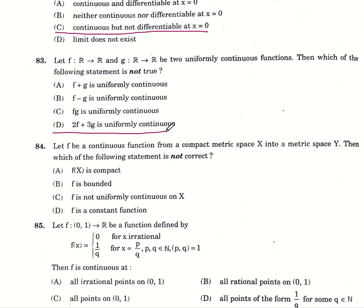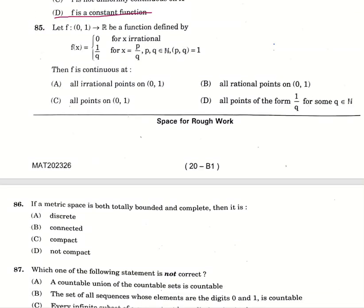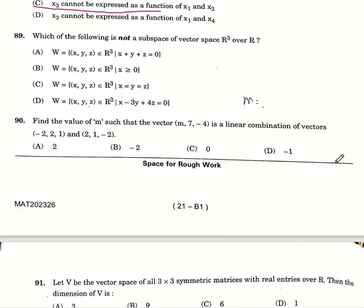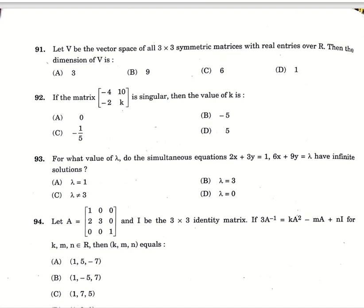84, let F be continuous function from a compact metric space into a metric space from X to Y, then which of the following is not correct? Option number D, F is a constant function. 85, a function is defined, then F is continuous at option number D, all points in the form of 1 by Q for some Q belonging to N. 86th question, if a metric space is both totally bounded and complete, then it is compact. 87, which of the following is not correct? Option number D, intersection of closed set and compact set is compact set. 88th question, the correct answer is option number C, X3 cannot be expressed as function of X1 and X2. 89, which of the following is not a subspace of vector space R cube over R? Option number C. 90, we have to form a linear combination of the given vectors and find the value of M. The value of M you will get is option number D minus 1. 91, last 10 to go. Let V be the vector space of 3 cross 3 symmetric matrices with real entries over R. Dimension of V is 6, option number C.